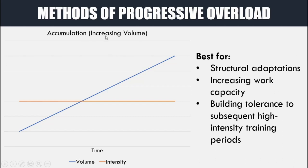The first method of progressive overload is accumulation — increasing our volume. This looks like a graph where over time we increase our volume while intensity remains the same or potentially slightly increases. This sort of progressive overload is best for structural adaptations, for example increasing the size of a muscle or getting connective tissue adaptations. It's also good for increasing work capacity, allowing us to recover better from training, and building tolerance to subsequent periods of high intensity training.